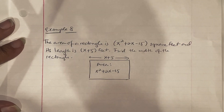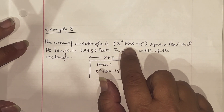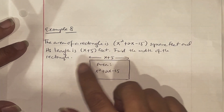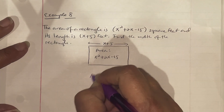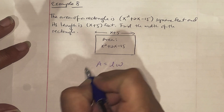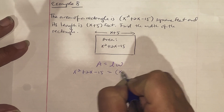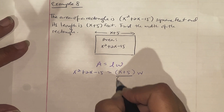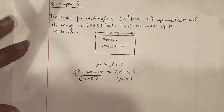Example 8: The area of a rectangle is x squared plus 2x minus 15 square feet, and its length is x plus 5 feet. Find the width. Recall that area equals length times width. So if area is x squared plus 2x minus 15 and length is x plus 5, we divide both sides by x plus 5 to find the width, meaning we'll use synthetic division.